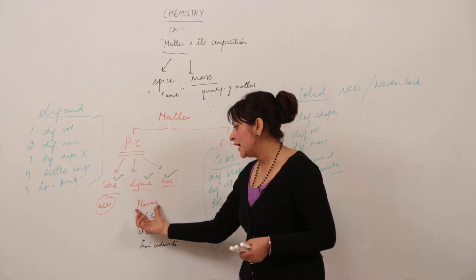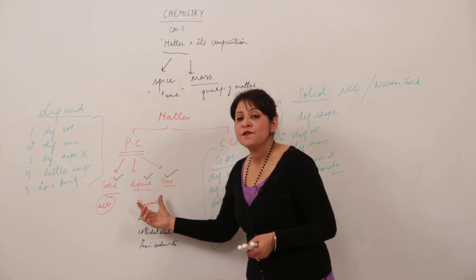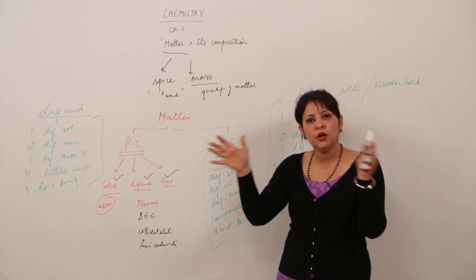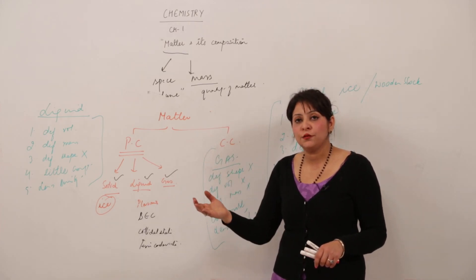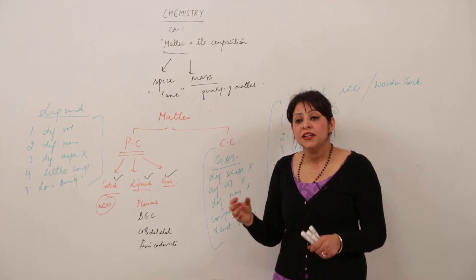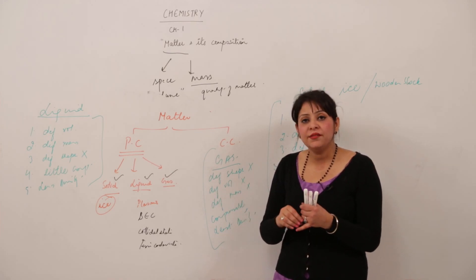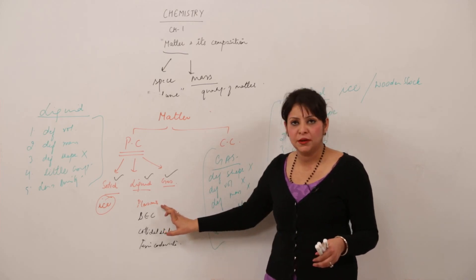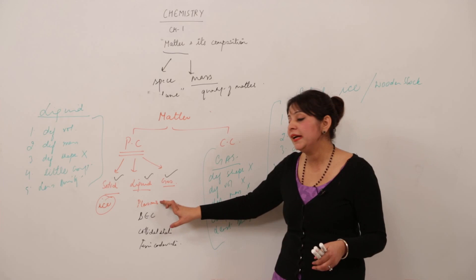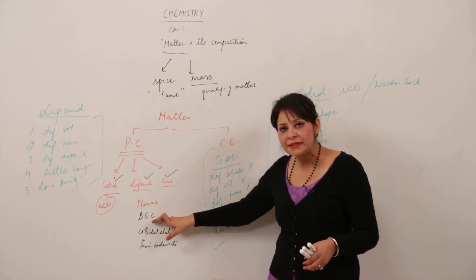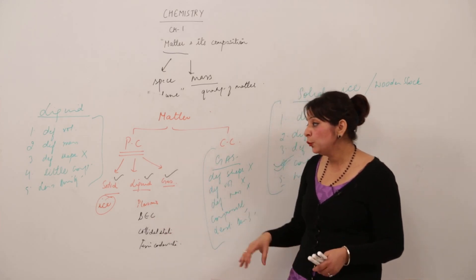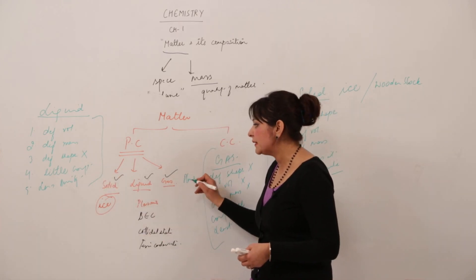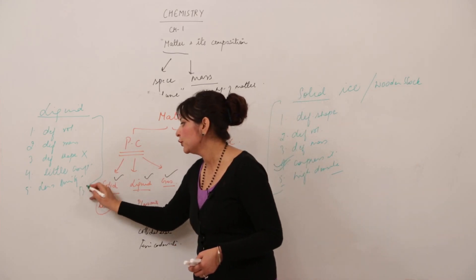Plasma is the fourth state of matter. It is achieved when you superheat a gas. In gas, the particles are already far apart, but when the gas is superheated, ions and electrons move out and charged particles start moving randomly — that is called plasma. BEC (Bose-Einstein Condensate) is a supercooled solid state. Plasma comes after gas, and BEC comes before solid.